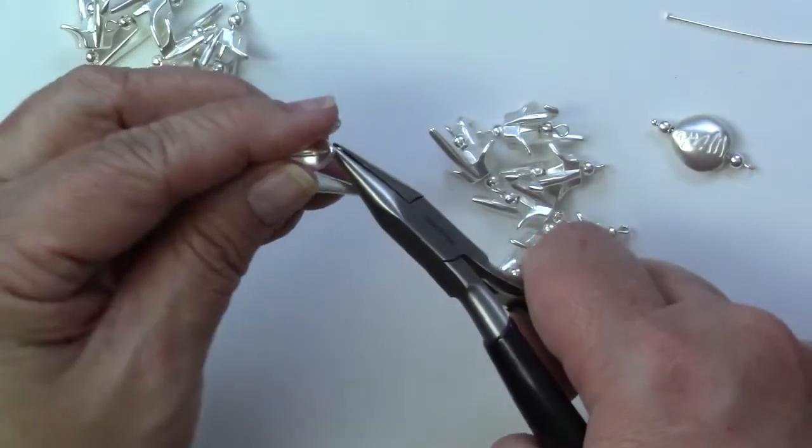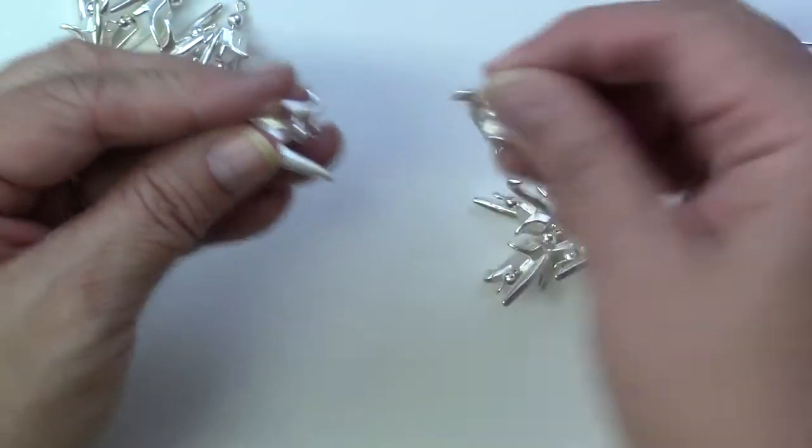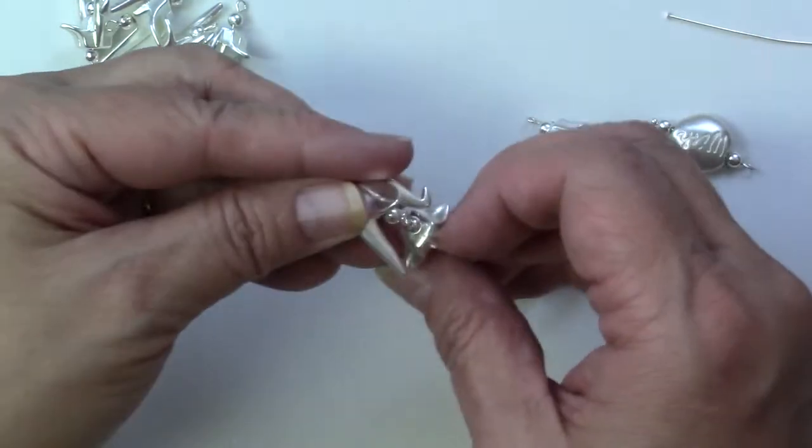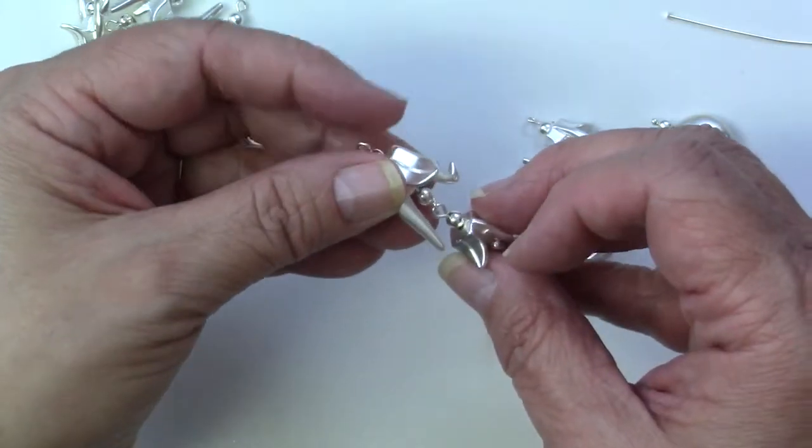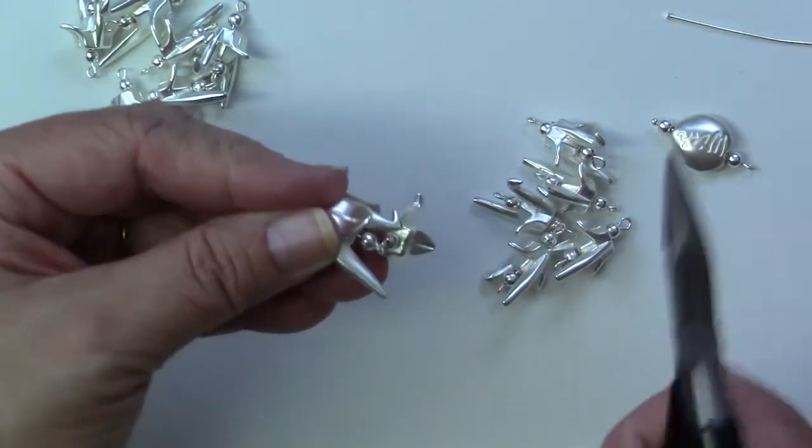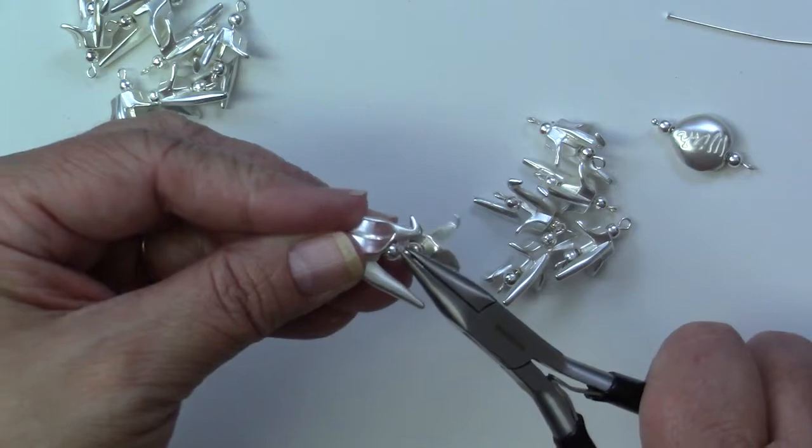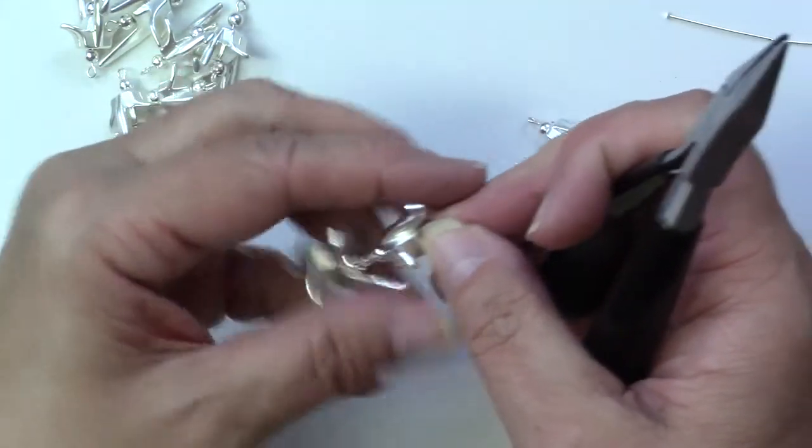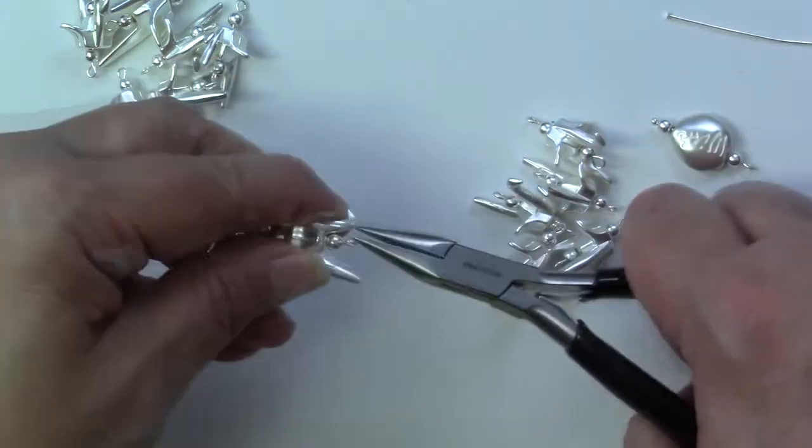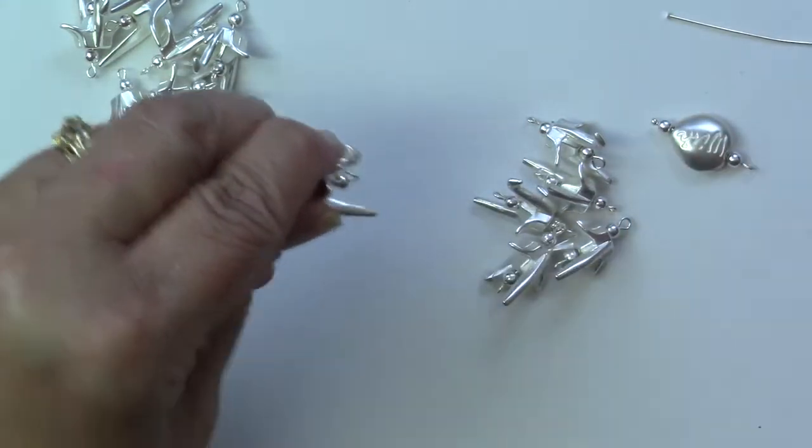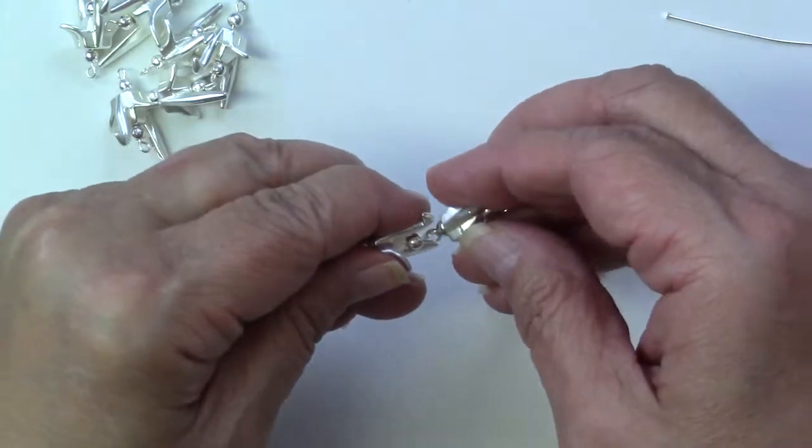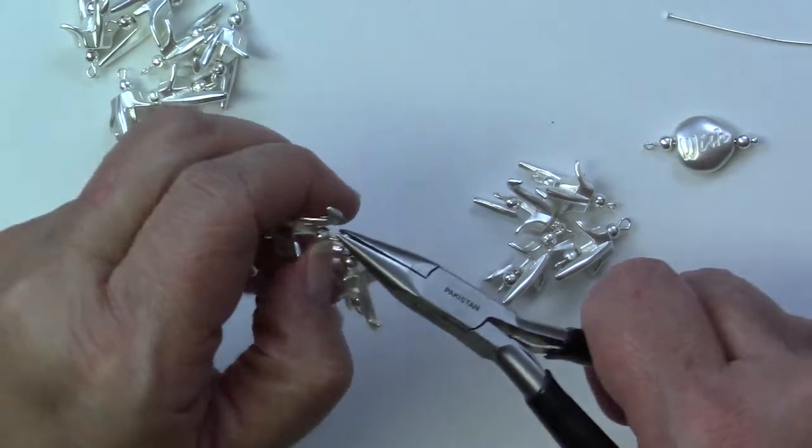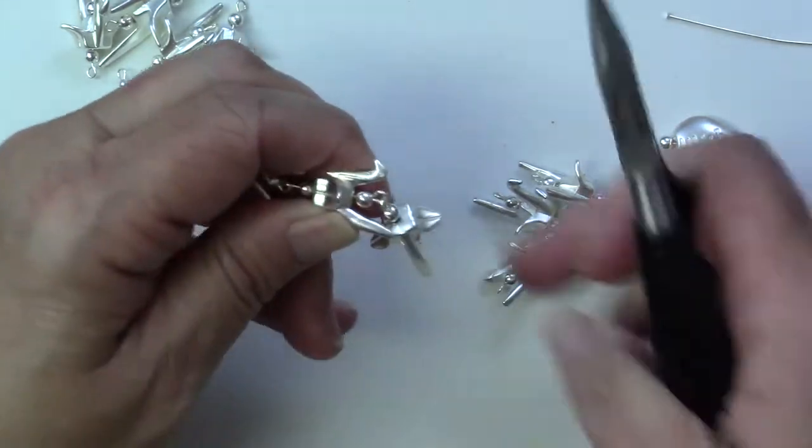Once I have all of these connecting pieces completed I'll start to assemble the necklace. I have chain nose pliers and I'm starting with the drop here and that's three of the origami cranes. Now I'm just going to do each side and I'm using seven connecting pieces on each side of the necklace.